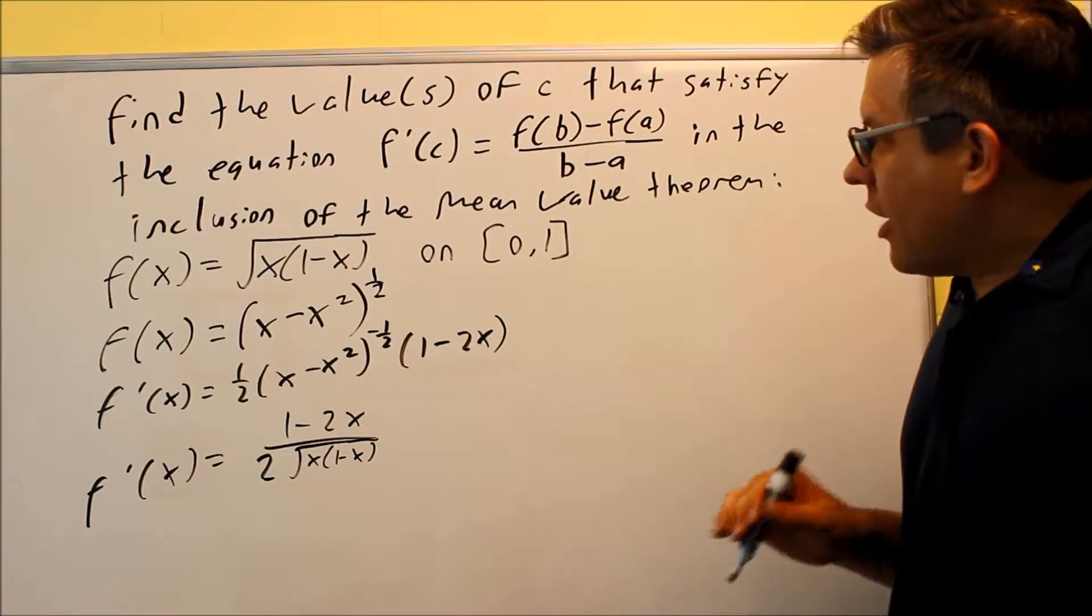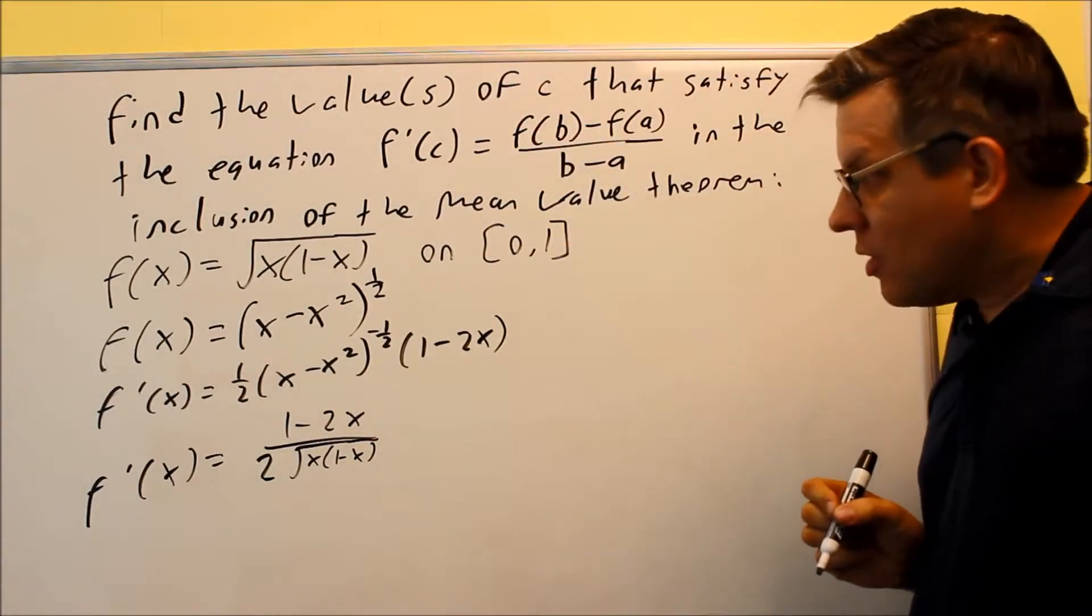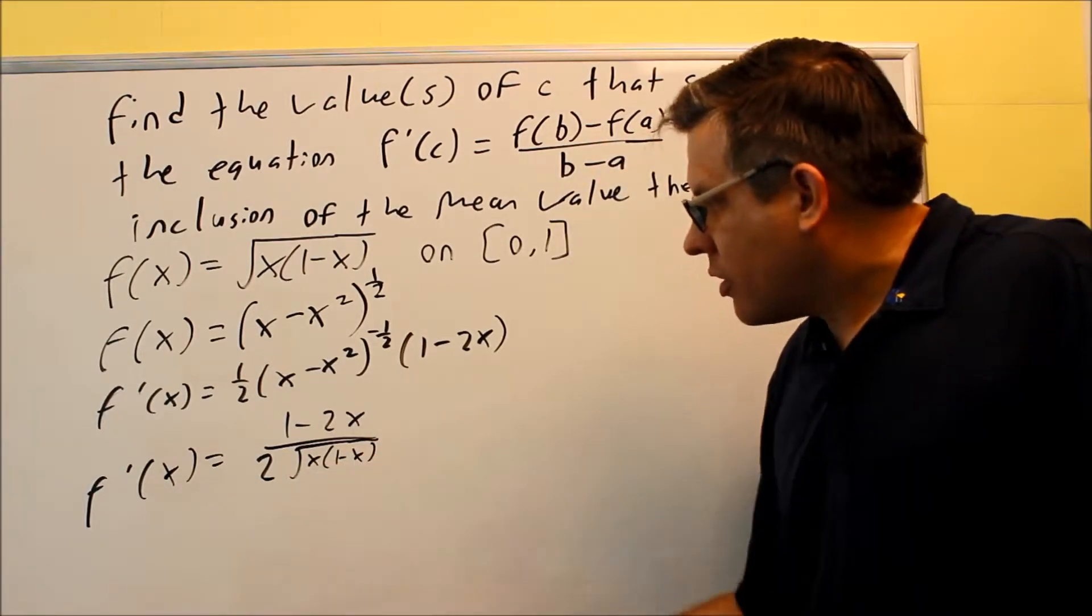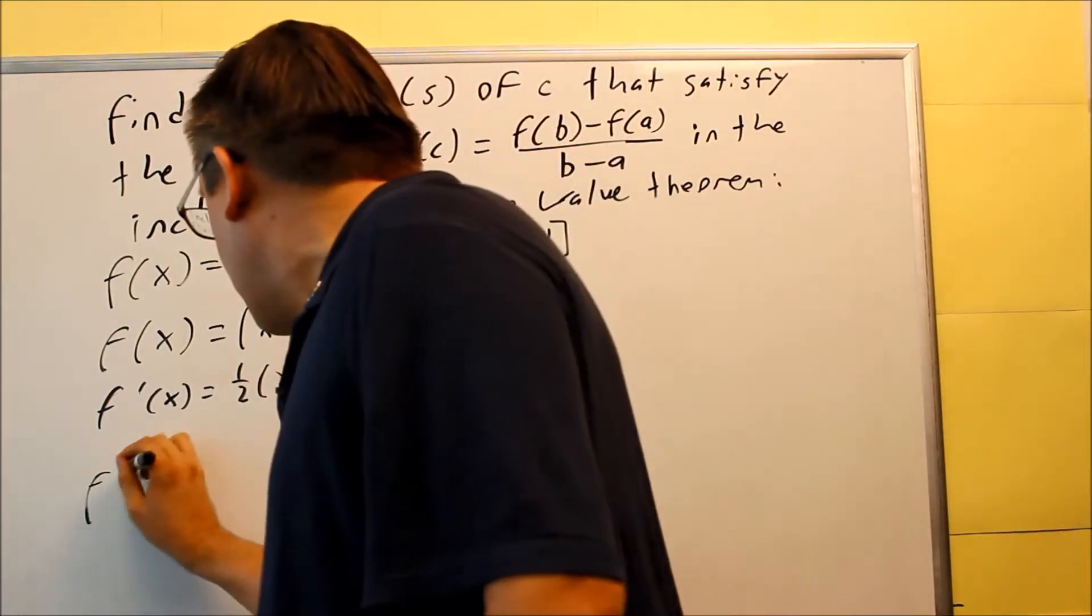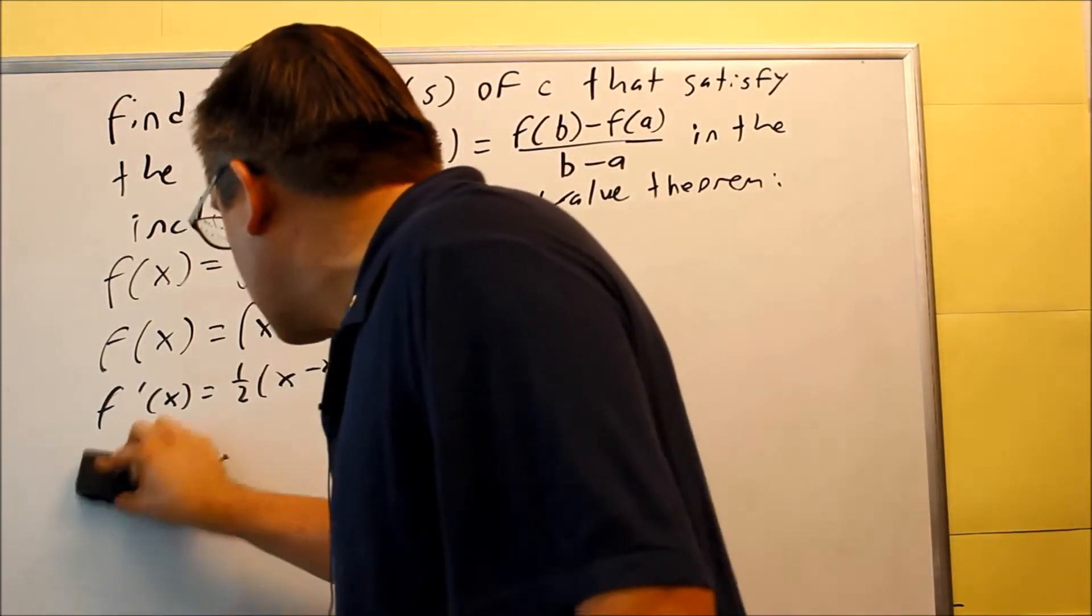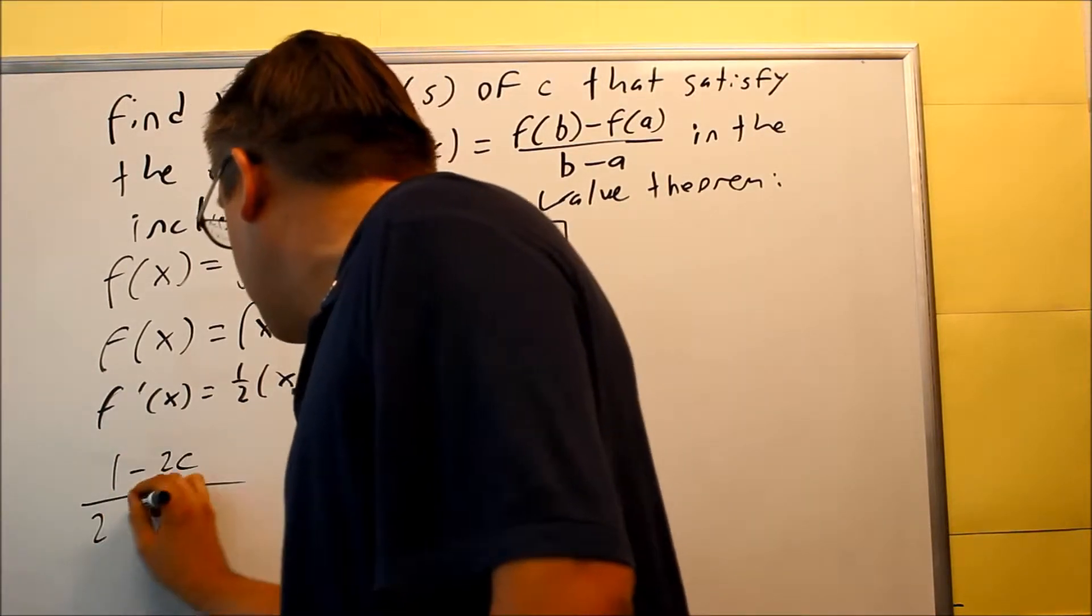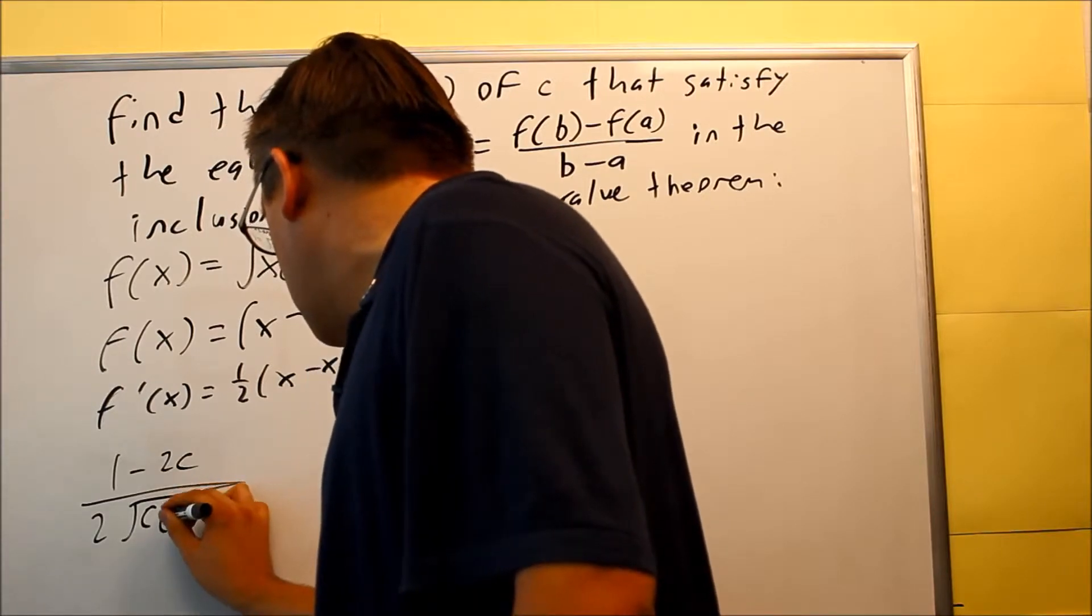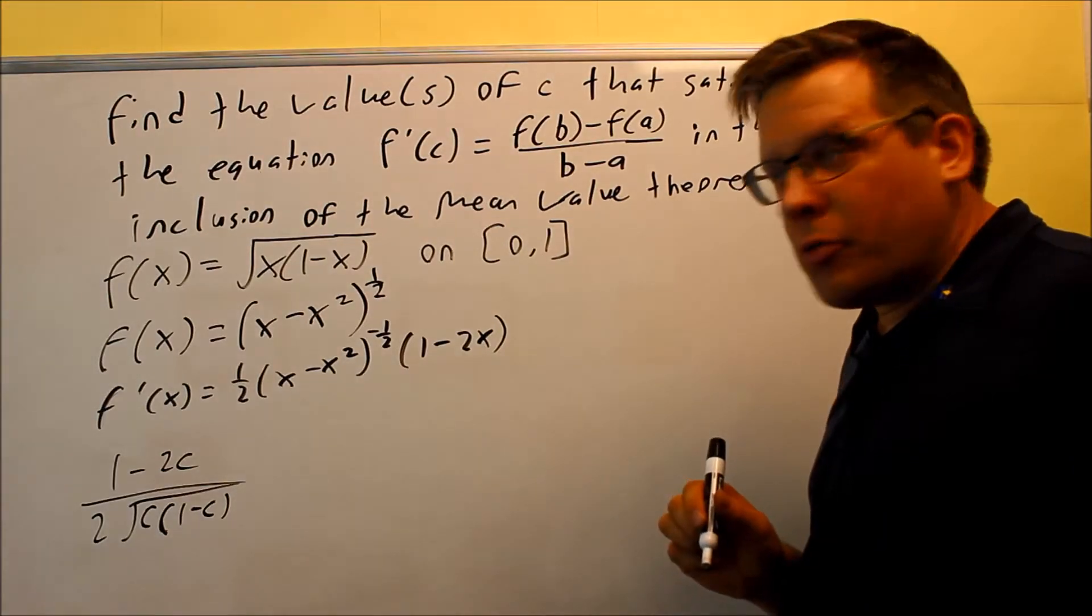Now that we've done that, we have to do this and find the value for c that satisfies that. Which means I need to set up this equation. So here's our derivative. I'm going to do f primed of c. So I'll just go ahead directly and put in a c for that one. We have c times 1 minus c. All that's underneath the square root. So that's the left hand side of our formula, f primed of c.